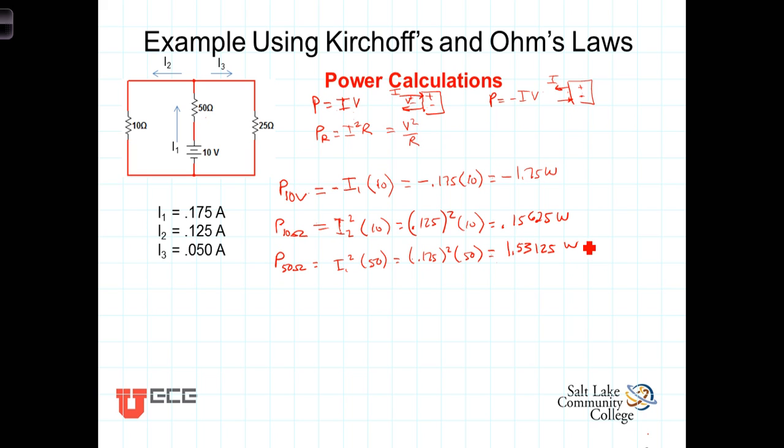And finally, P sub 25 ohms is equal to, the current flowing through the 25 ohm resistor is I3, I3 squared times 25. I3 we found to be 0.05 squared times 25, and that equals 0.0625 watts.